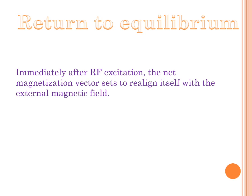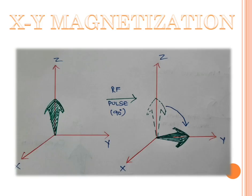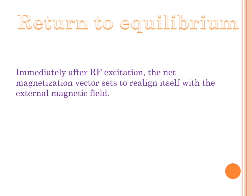After applying the 90-degree RF pulse, if you withdraw it, the magnetization will return to equilibrium. As shown in the image, after the RF pulse brings magnetization to the Y axis, withdrawing the RF pulse causes the magnetization to slowly return back to the Z axis, and this phenomenon is known as return to equilibrium.